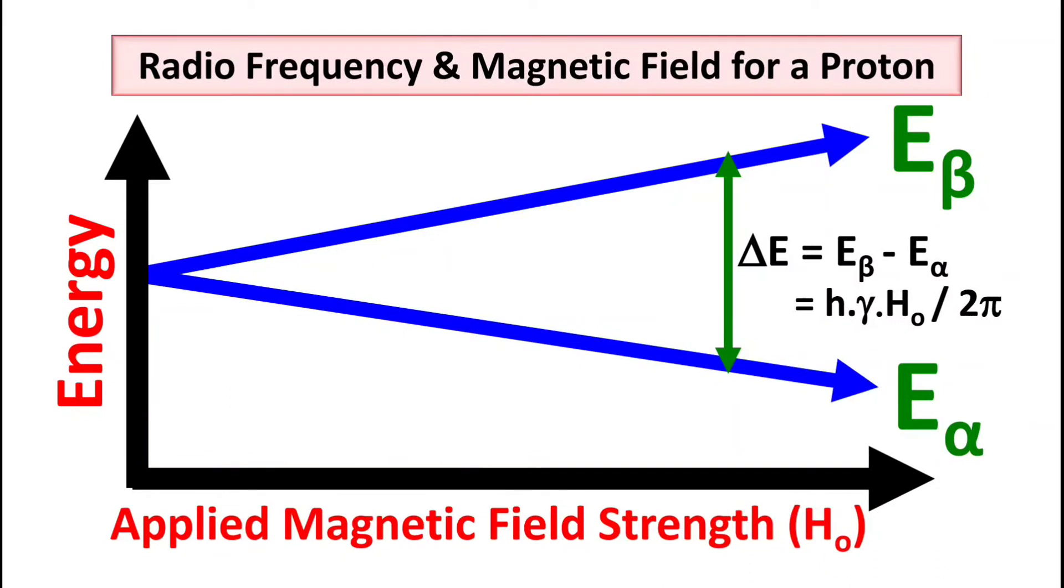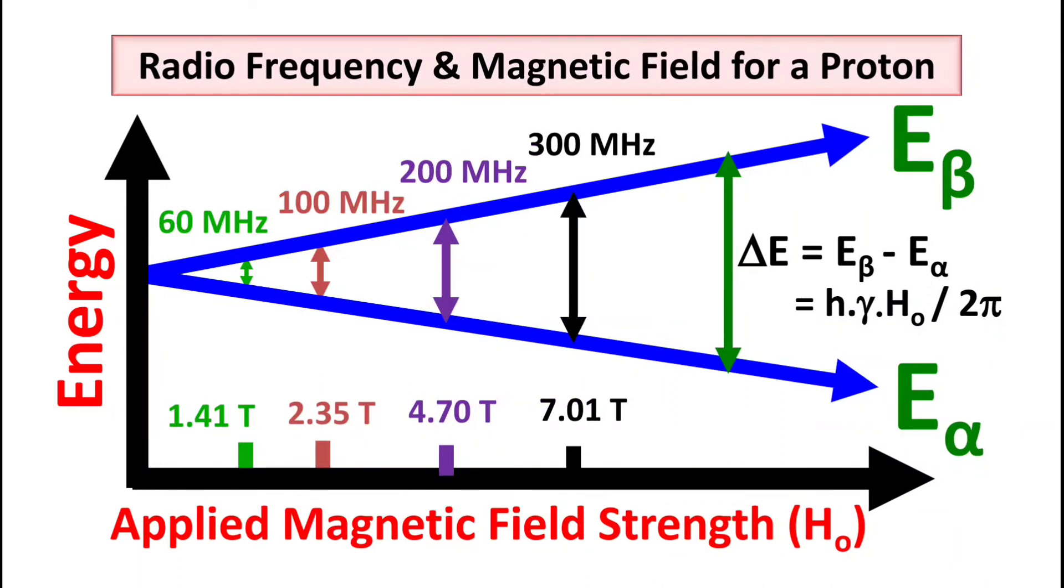Now let's discuss how the radio frequency and magnetic field of the external field play an important role for NMR signal. If you are applying a variety of magnetic field strengths, the corresponding radio frequency value can be changed. If you are using 60 megahertz, the corresponding magnetic field strength required is 1.41 Tesla. For 100 megahertz we require 2.35 Tesla. For 200 megahertz we need 4.70 Tesla. For 300 megahertz we require 7.01 Tesla, and for 500 megahertz we need 11.74 Tesla, and so on.